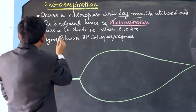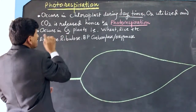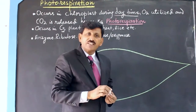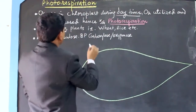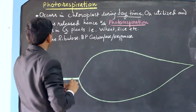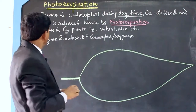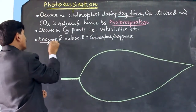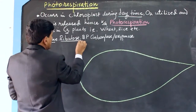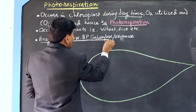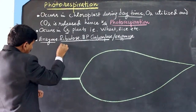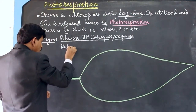Photorespiration occurs in C3 plants. C3 plants, which we have discussed in the Calvin cycle, include wheat, rice, etc. The enzyme that catalyzes the reaction is known as ribulose bisphosphate carboxylase/oxygenase, or simply RuBisCO.